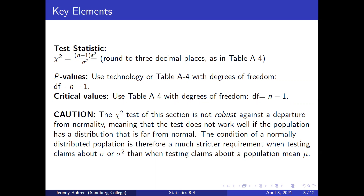Use technology or table A4 with degrees of freedom df equals n minus 1 for p-values. Use table A4 with degrees of freedom df equals n minus 1 for critical values. Caution: the chi-square test of this section is not robust against a departure from normality, meaning that the test does not work well if the population has a distribution that is far from normal. The condition of a normally distributed population is therefore a much stricter requirement when testing claims about sigma or sigma squared than when testing claims about a population mean mu.